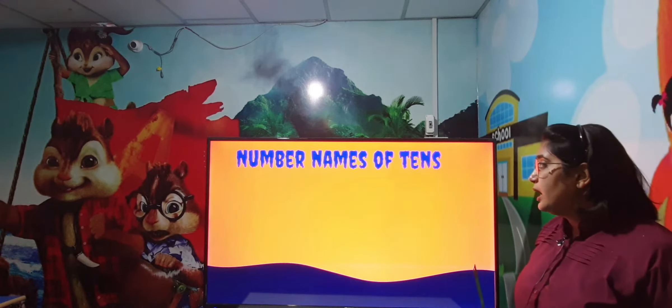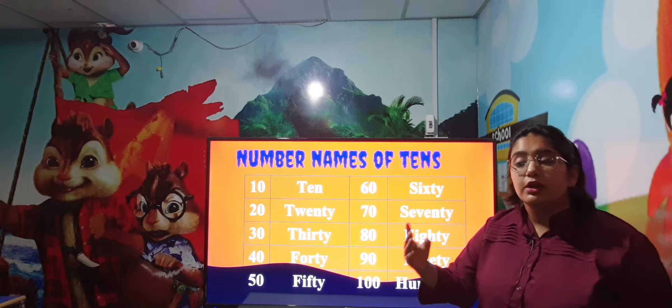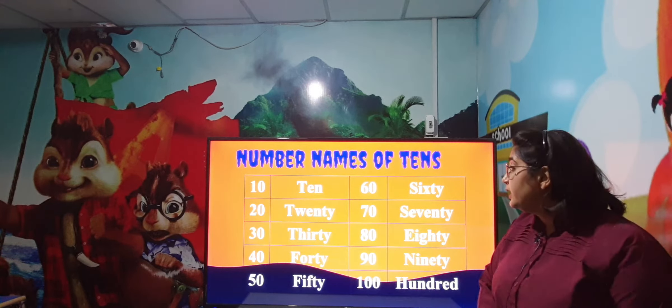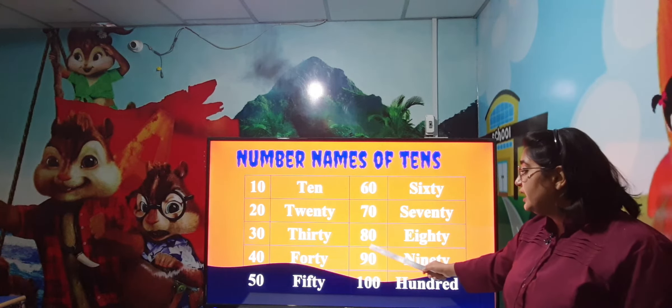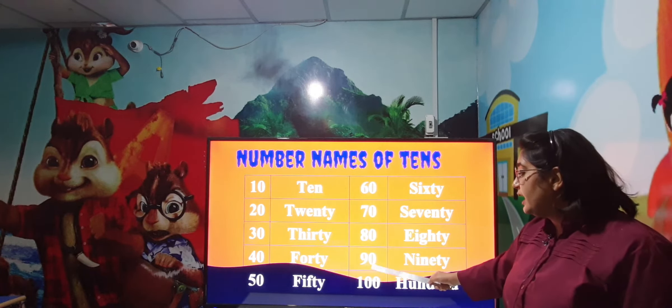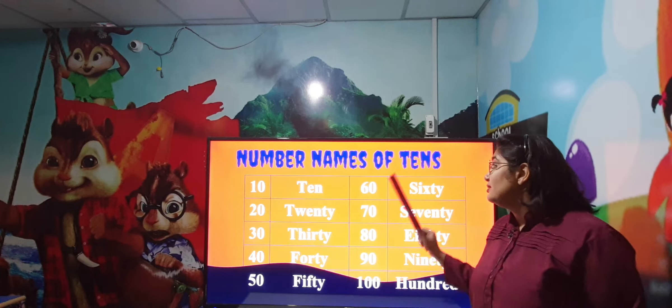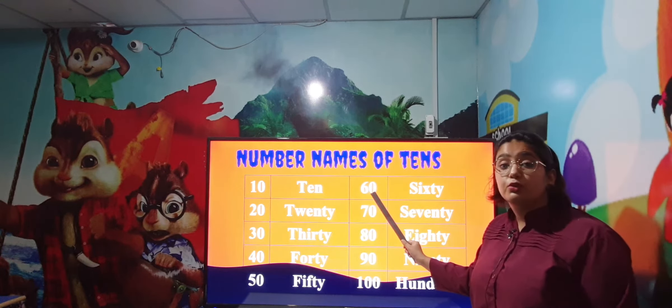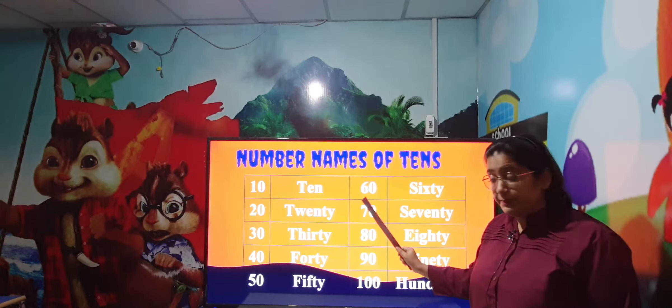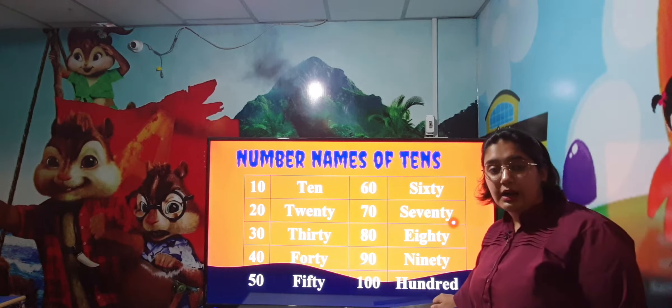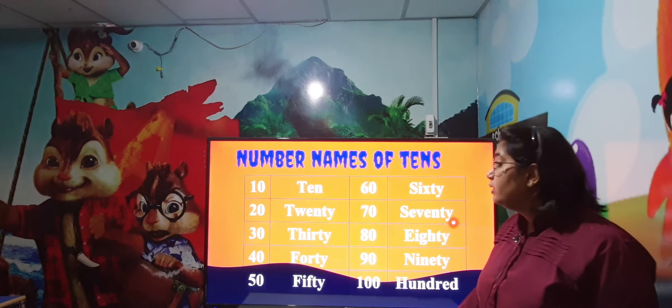Now, number names of tens. Baccho, tens kya hota hai? Jaise aapka 10, 20, 30, 40, 50, 60, 70, 80, 90, and 100. Ye jo last mein zero waale number hote hain, inhein hum bolte hain tens ke numbers. Jin ke andar sirf do digit hote hain. And this is your 100.